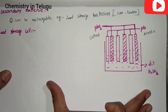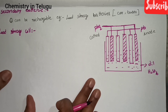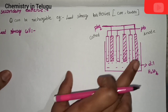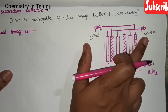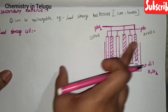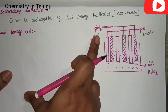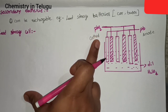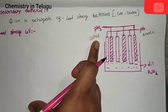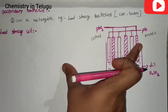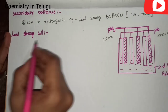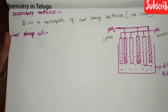We have used the anode and cathode in this cell. Let the cell work. This is the cathode, and this is the anode. We will work through the reaction step by step.